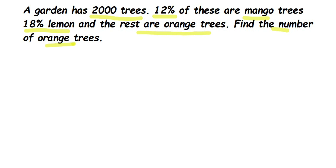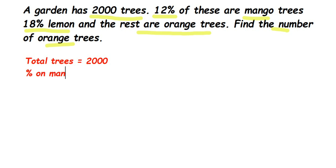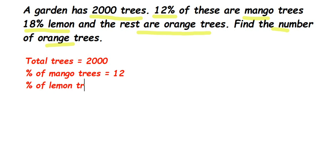Let's write down what we know. Total trees = 2000. Percentage of mango trees = 12%. Percentage of lemon trees = 18%.